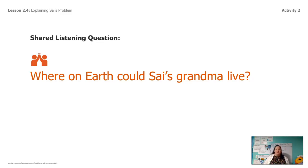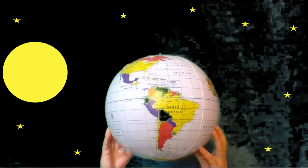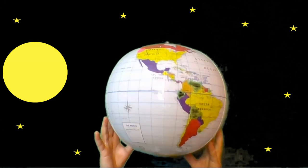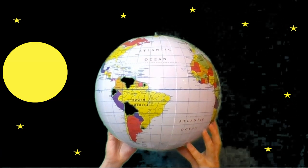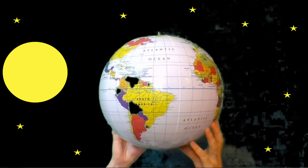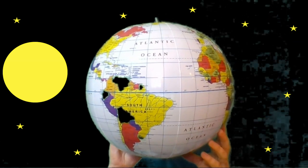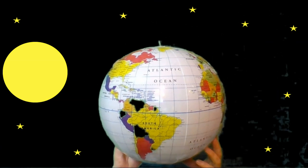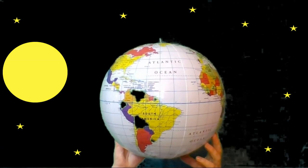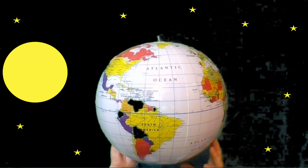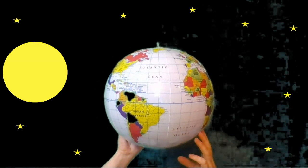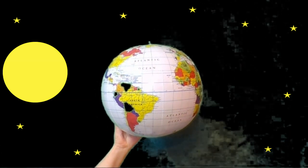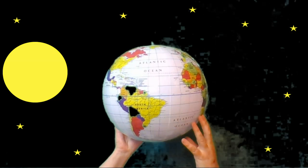Now that we know where Psy lives and which way the globe is facing for Psy to be having daytime, we need to figure out where his grandma could live. Let's go back out to the stars. I need your help with this next part too. If that's Psy and he's pointing towards the sun, so he's having daytime — where could his grandma live? Go ahead and point to the globe, all the places where Psy's grandma could be where she would have nighttime.